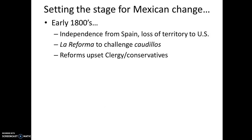Mexico spent the greater portion of the 1800s really struggling for stability. They declared independence from Spain in 1821, but they lost Texas and half of their territory to the United States in the first half of the 19th century — this would be the U.S.-Mexican War. Inspired by the revolutions of 1848 breaking out across Europe, the La Reforma movement sought to stem the power of the Caudillos — basically a soldier-politician, along the lines of Antonio López de Santa Anna.